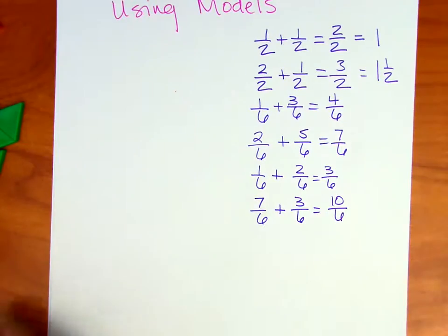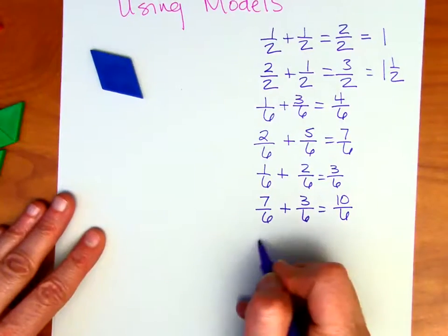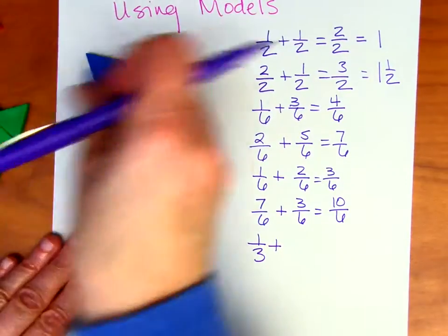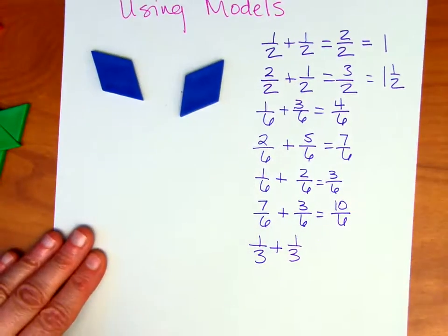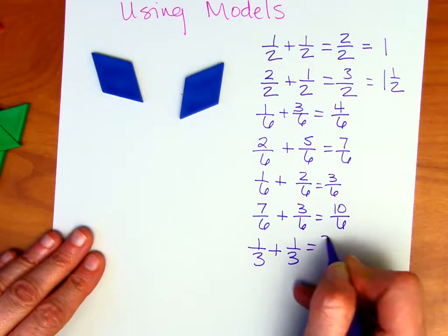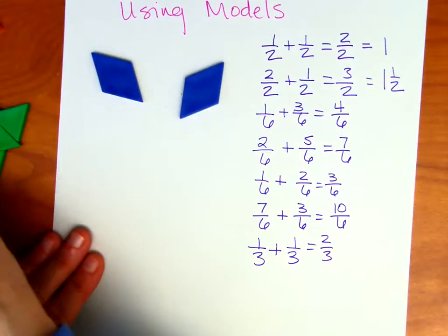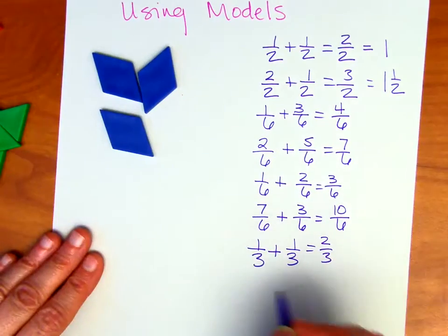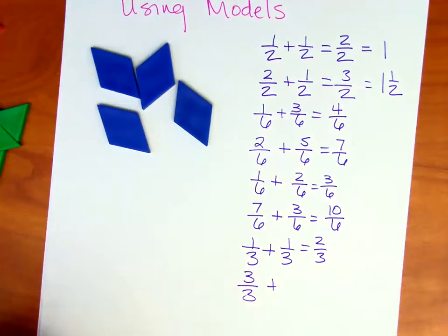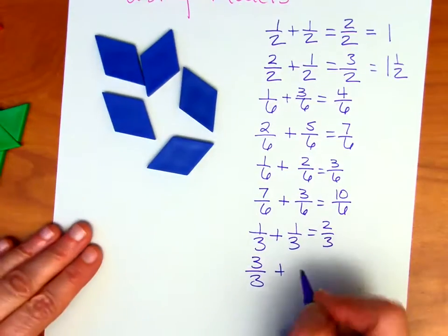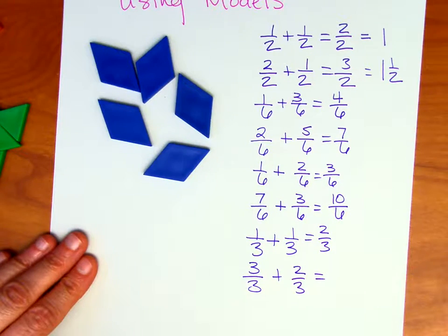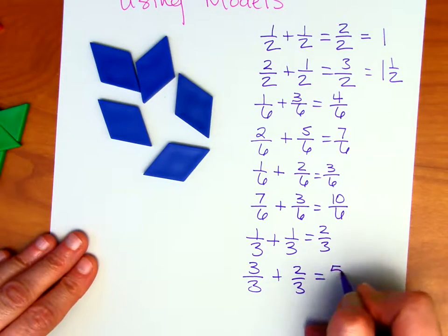Let's work with some rhombuses. Let's say we have one-third, and we're going to add to that one more third. How many thirds do we have? We have two-thirds. Let's say we have three-thirds altogether, and we're going to add two more thirds — two-thirds. How many thirds do we have? Looks like we have five — five-thirds.